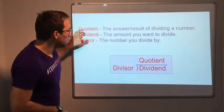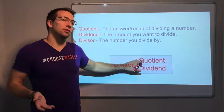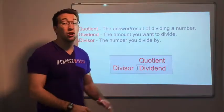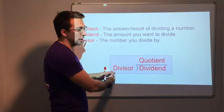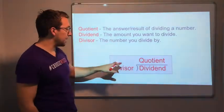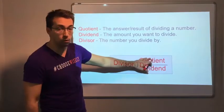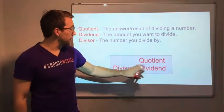Quick review: our quotient, that's the answer. The dividend is the number that we are dividing. We're going to divide the dividend by the divisor. So 12 divided by 3 equals 4. 12 is the dividend, 3 is the divisor, and 4 is the quotient, the answer.